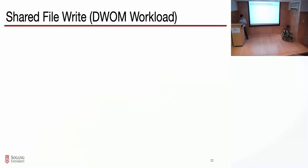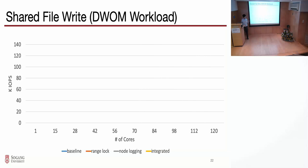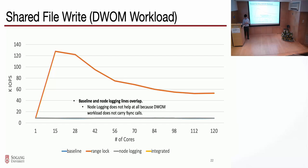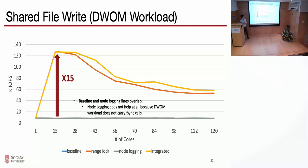For the shared write case, which is the DWM workload, the baseline is original F2FS. It does not scale, as shown at the beginning of this presentation. When we allow parallel writes using the range lock, the throughput starts to scale as we increase cores. The node logging approach shows the same throughput as baseline because it doesn't have the range lock mechanism, so threads cannot write to the same file concurrently. In the integrated implementation — which includes both the range lock and node logging mechanisms — it shows 15x throughput improvement at 15 cores and 6.8x improvement at 120 cores.